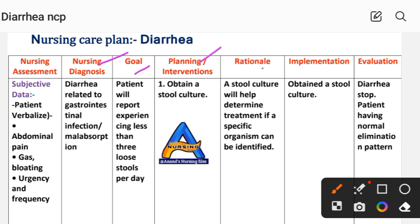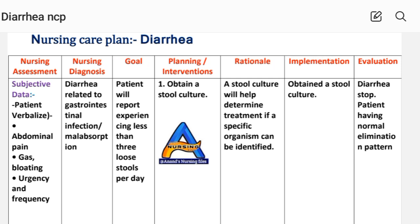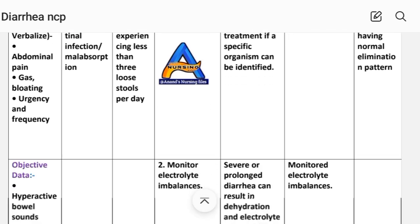Next, the intervention, rationale, and implementation. Intervention and implementation is the acting phase of the nursing care plan, where the intervention plan is applied. The first intervention is to obtain a stool culture as part of the rational procedure.